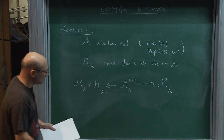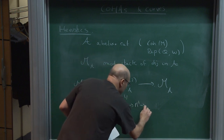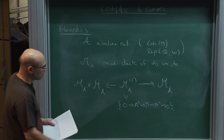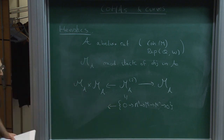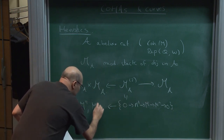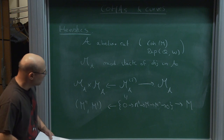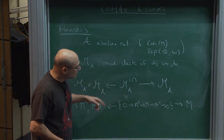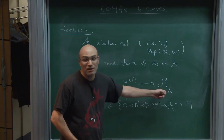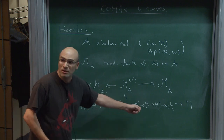This correspondence goes through the stack of short exact sequences — the stack parametrizing short exact sequences. One of the maps assigns the extreme points of the short exact sequence, and the other map assigns the middle. The fiber over an object is the Grassmannian of sub-objects, and the fiber over a pair of objects is all extensions of those two objects.